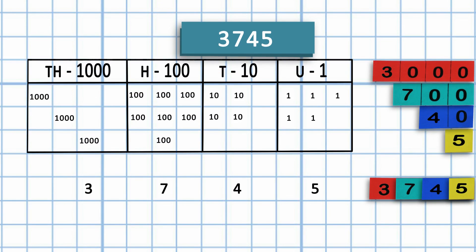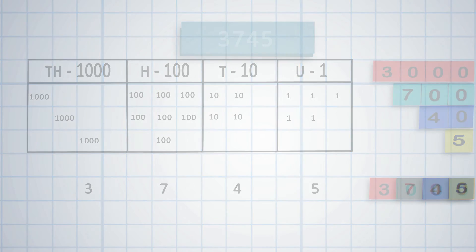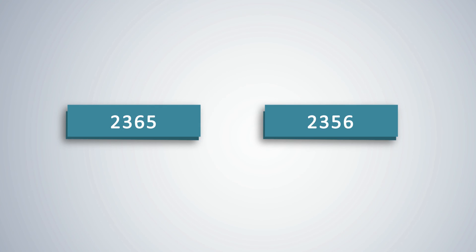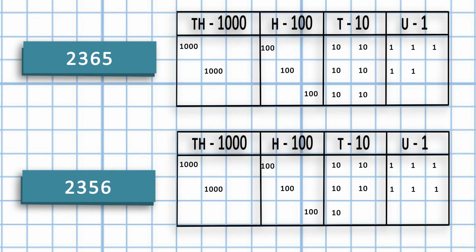Show students how to write the expanded form of numbers in a grid taking the same example. They can now learn to compare two numbers. Which is greater of the 2, 2,365 or 2,356? Let students mark the number of 1s, 10s, 100s, 1000s on the grid. Remind students to start comparison from the highest place value. Compare and strike the number of 1000s in both numbers. They are both equal in number, which is actually the face value of the digit.